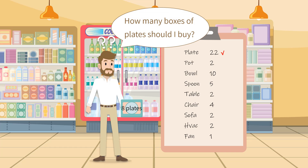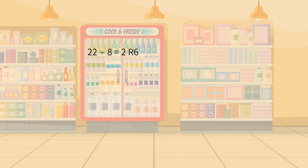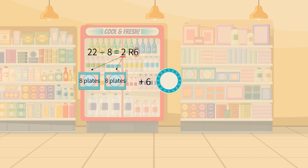It can be easily found that 22 divided by 8 gives 2 with a remainder of 6. The remainder means that if Uncle Josh buys 2 boxes, he still needs 6 more plates in his kitchen. In this case, in order to satisfy his need, the remainder means he should buy 1 more box of plates. We can thus round up the quotient to 3. Uncle Josh should buy 3 boxes of plates.